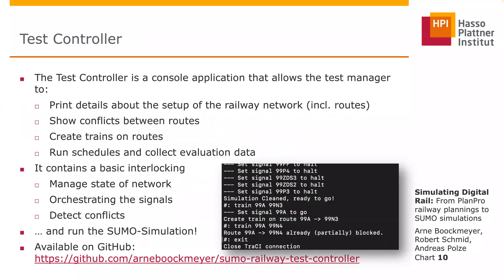To run these scenarios, we developed a test controller, which starts a TraCI connection to the SUMO simulation and can create trains — for example, a schedule driving from station A to station B, platform 1 to platform 2. It keeps track of all elements, sets the signals, moves the points virtually, and then actually runs the trains over TraCI. I'll demonstrate this now.